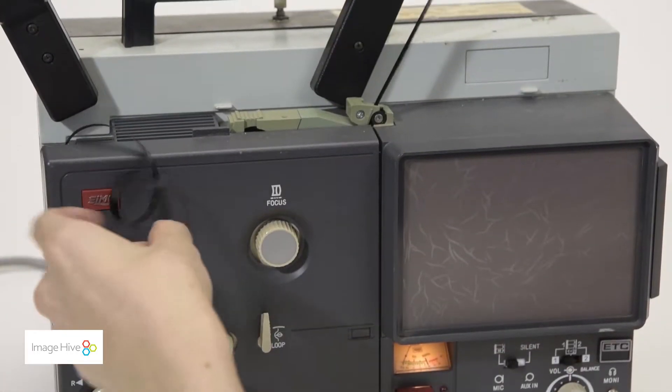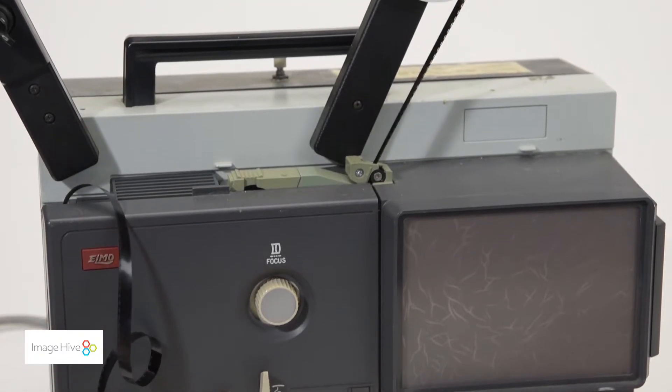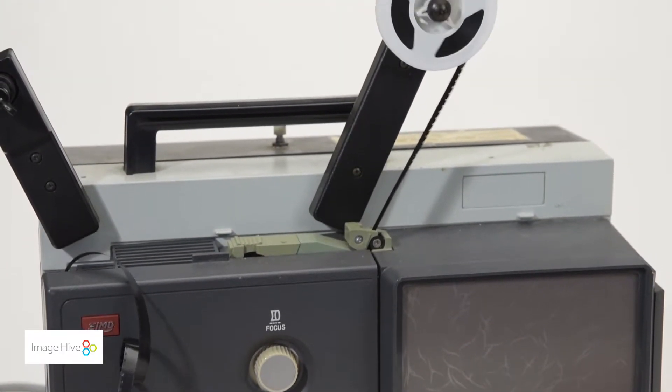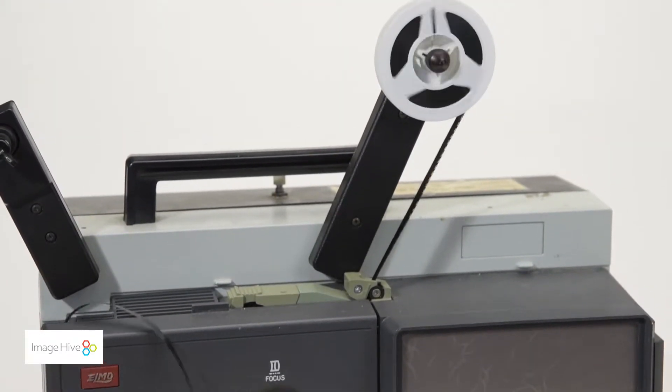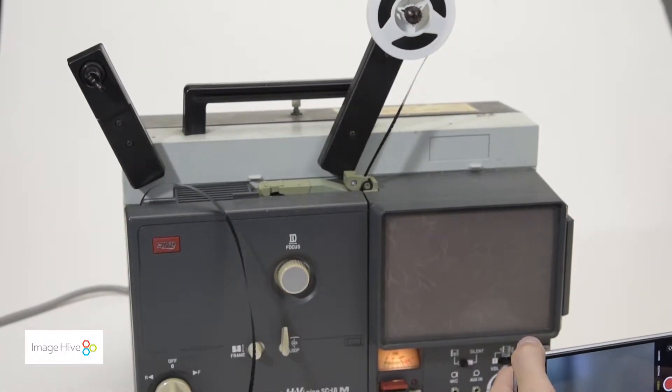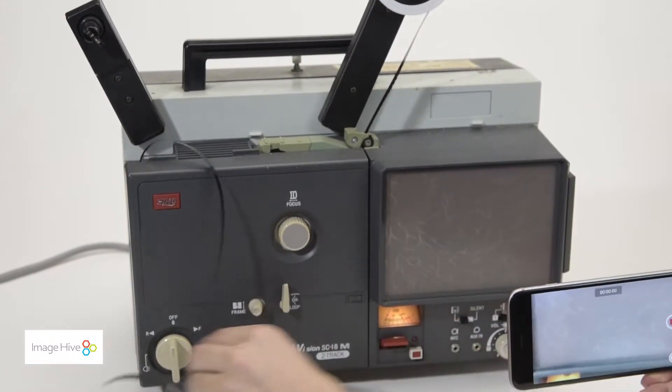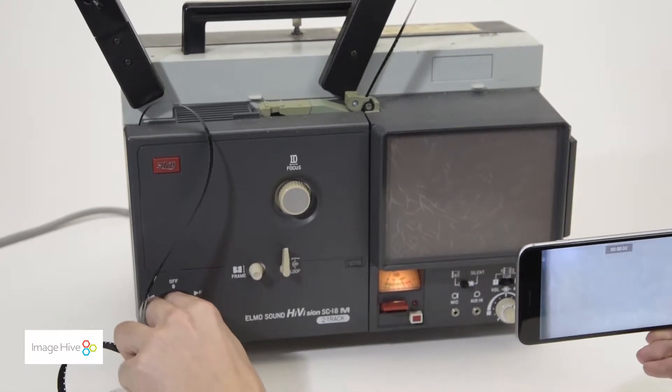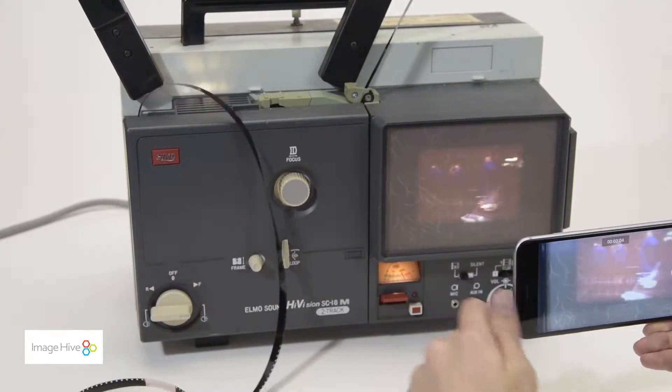The first and less expensive option is to project our film and then record it onto a camcorder or some other videotaping device as it is projecting. Old film projectors can be found for around $300 to $700 used.